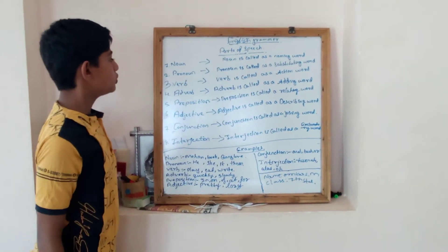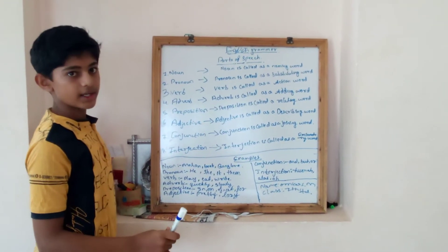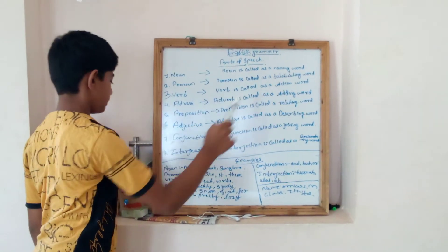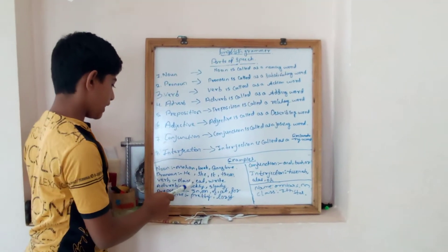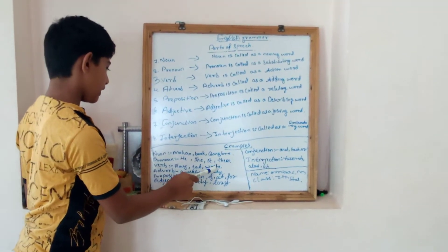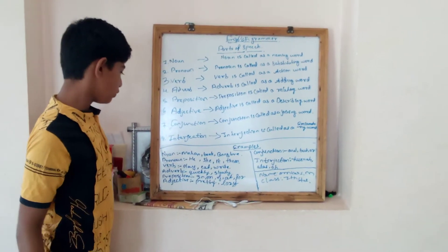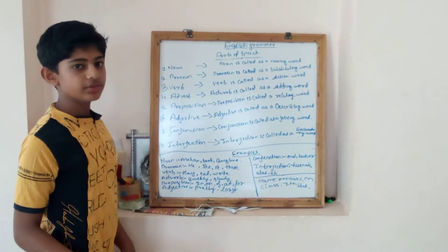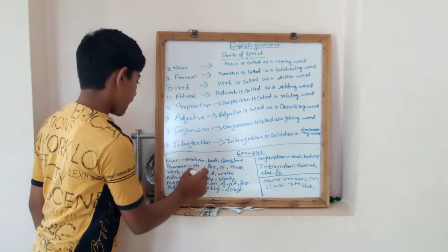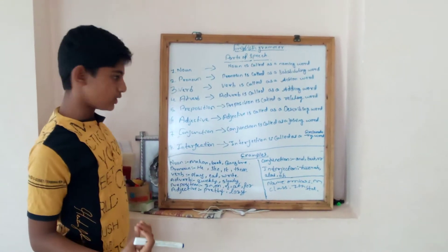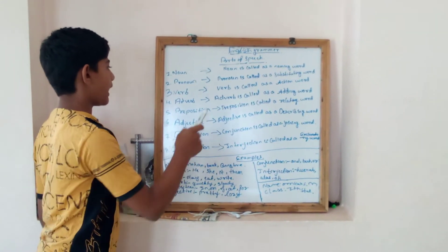Verb. Then what is verb? The verb is called as the action word. Example: play, eat and write. The action which we play and which we eat is an action. So it is called as the action word.